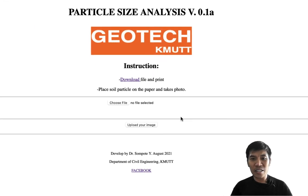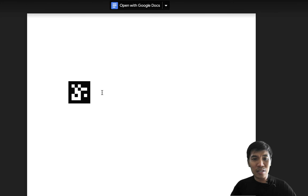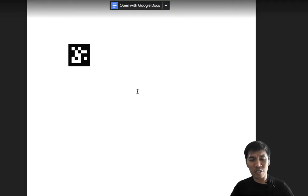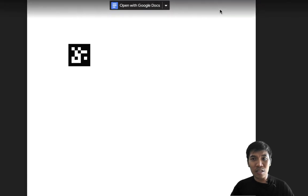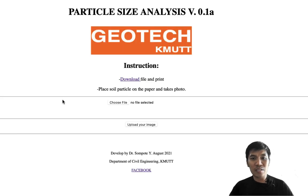The user interface is not very fancy but it's quite easy to use. You download this file first. This is a plain paper with one target marker. You download this file, print it out, put the soil on this paper, and take a picture.